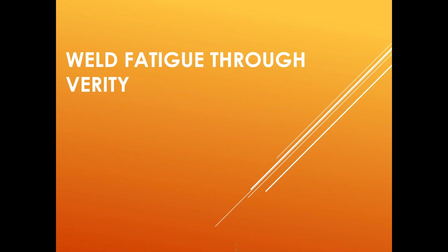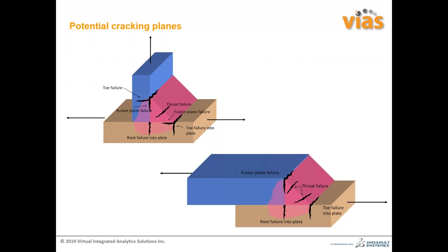Now we'll discuss fatigue of welds using a particular add-on of FE-Safe called Verity, which was developed by Battelle and later included in the Simulia portfolio. When you have a weld, there are typically two kinds shown here: a T-joint or a seam weld, each with different kinds of failure — toe failure, root failure, face failure, and throat failure. The Verity add-on can take into account fatigue life calculation for all these different failure modes, predicting toe failure, face failure, throat failure, and root failure very accurately. The Verity development started with Battelle.